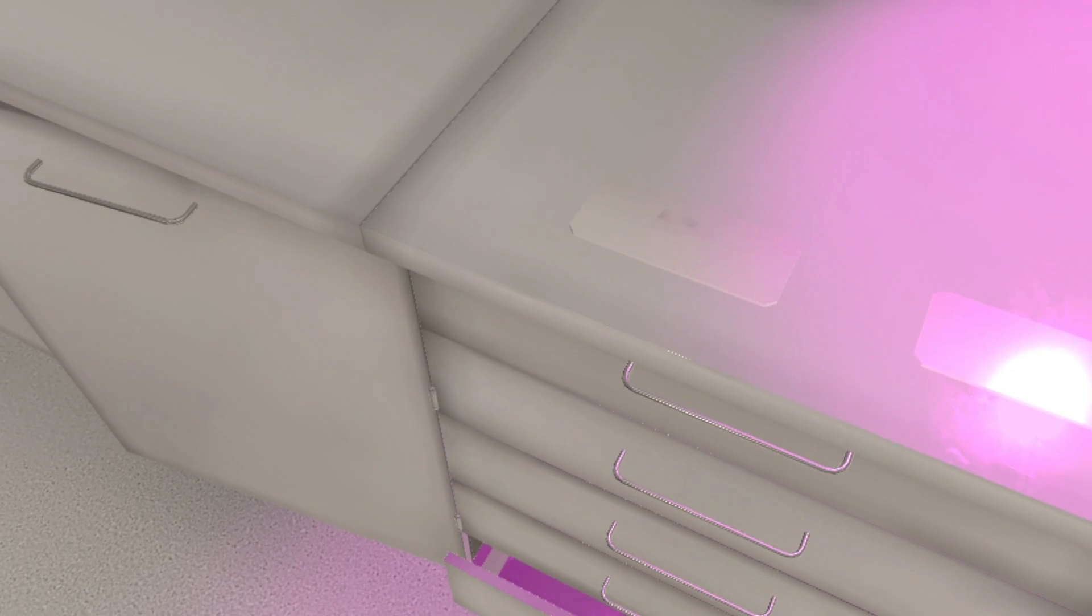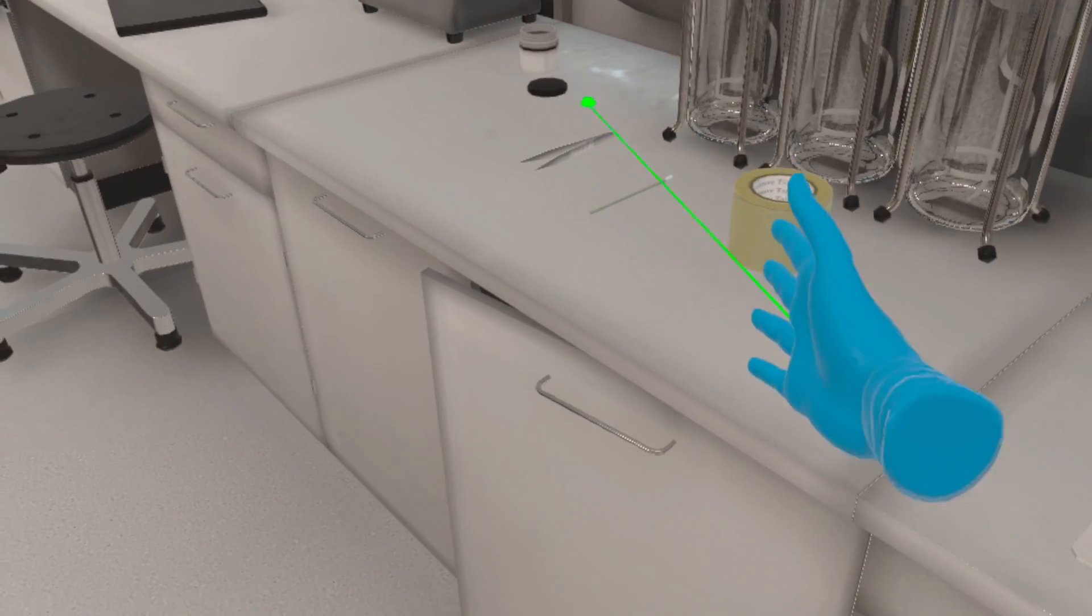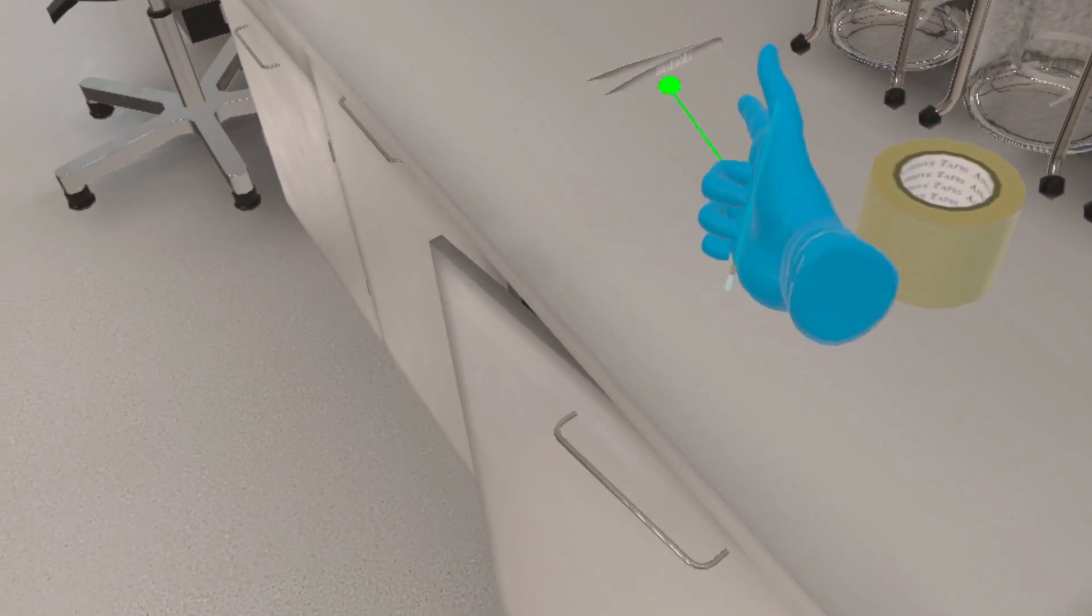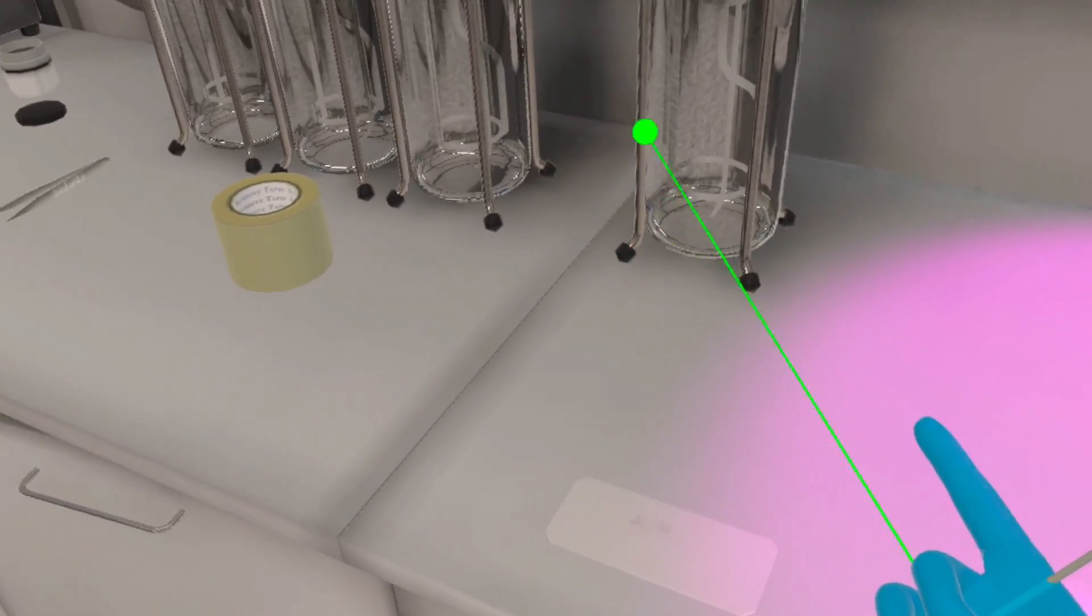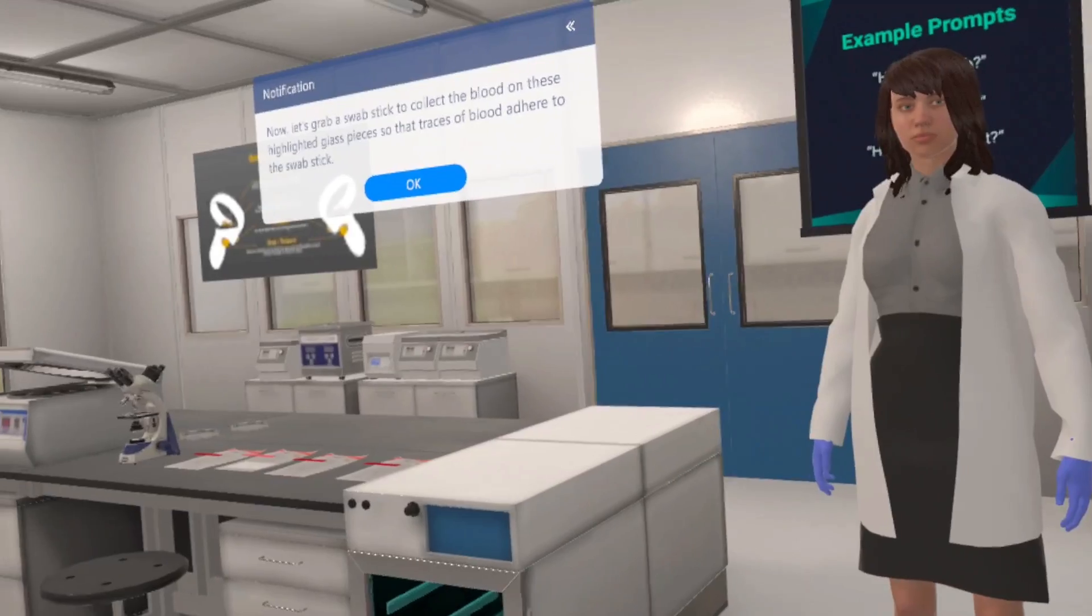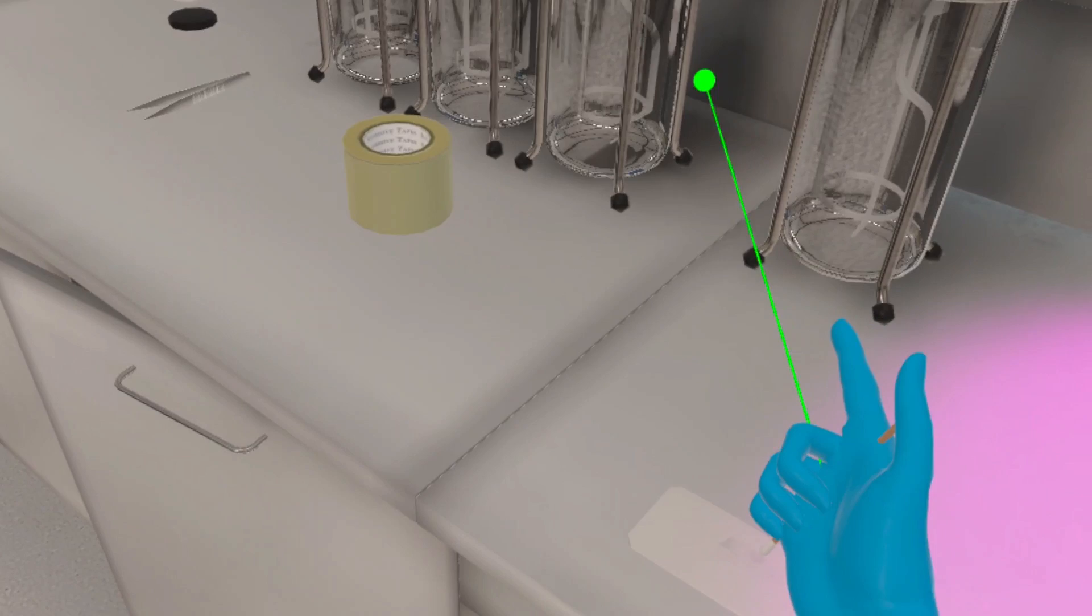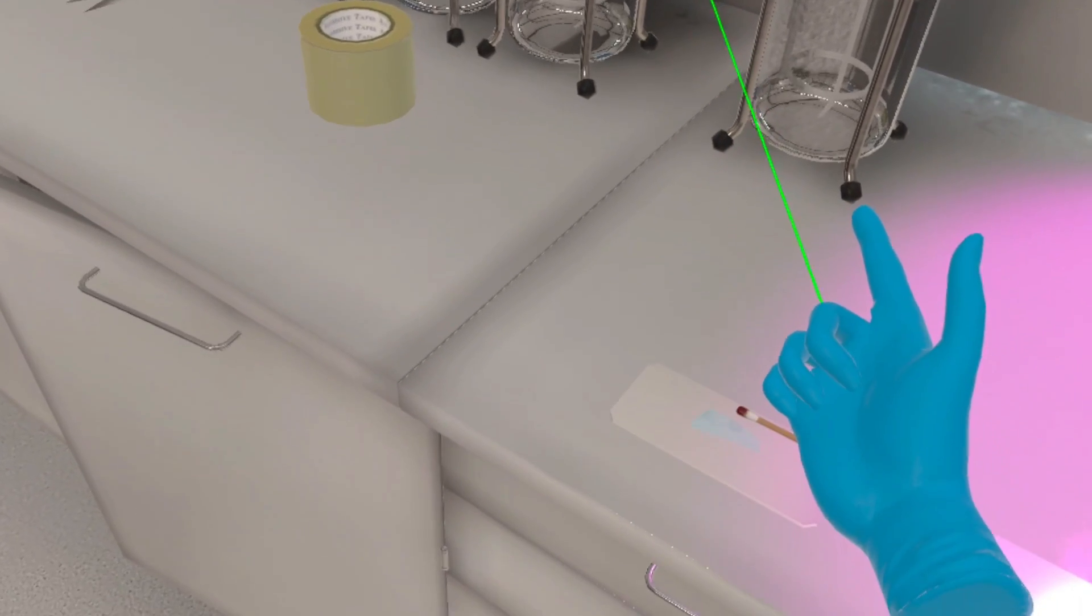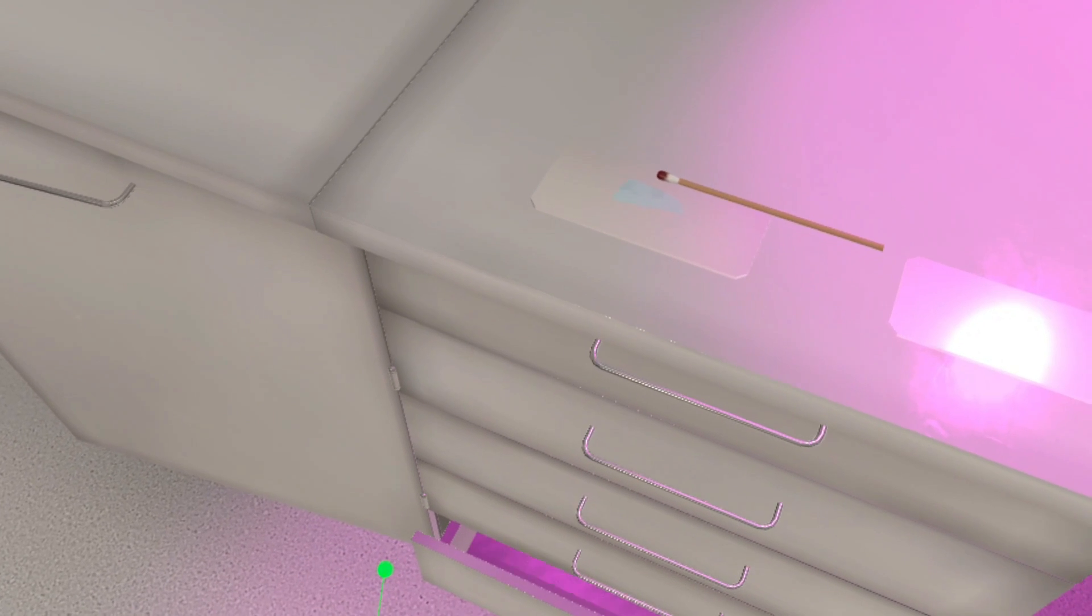Now let's grab a swab stick to collect the blood on these highlighted glass pieces so that traces of blood adhere to the swab stick. Place this swab stick on the glass slide next to it.